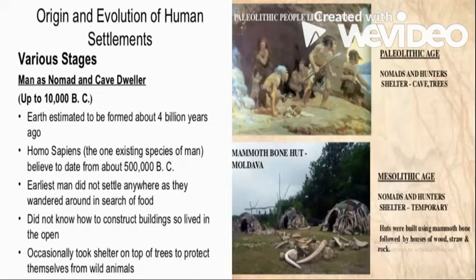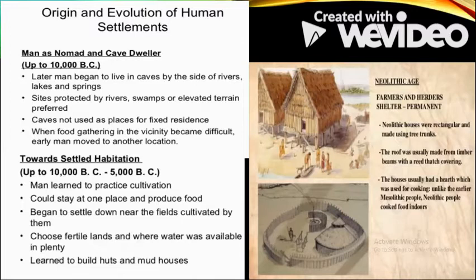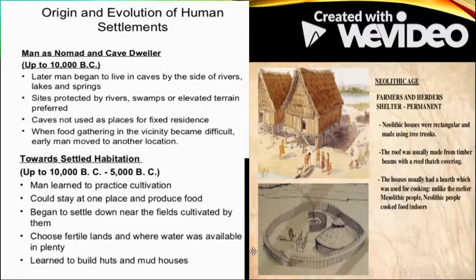From 10,000 BC to 5,000 BC, man started learning cultivation. He began making permanent structures because before cultivation, man was just a nomad moving in search of food. After that, he started settling in a certain place. When he came to know about cultivation, he wanted to settle — cultivation warranted that man settle at a particular place.